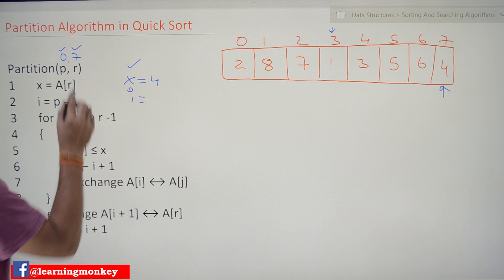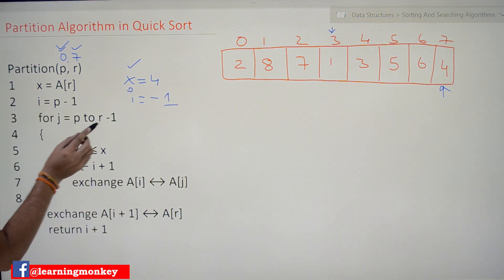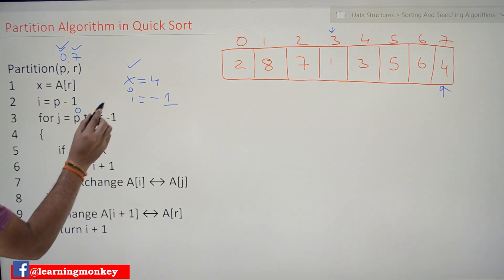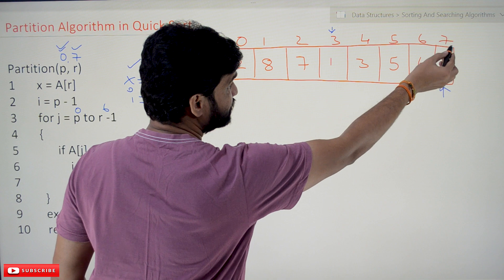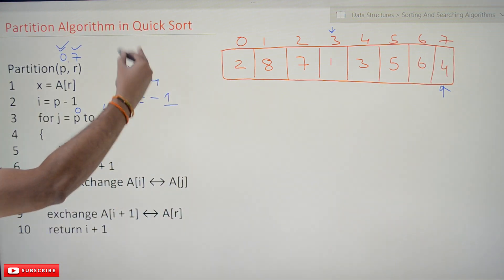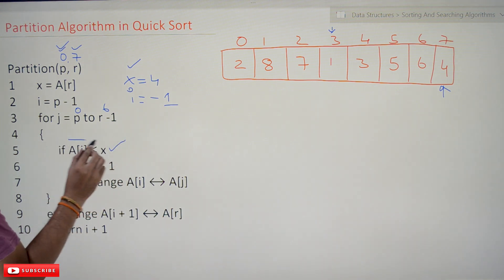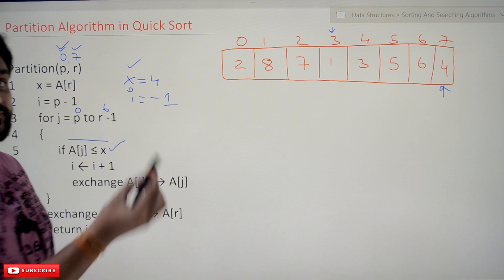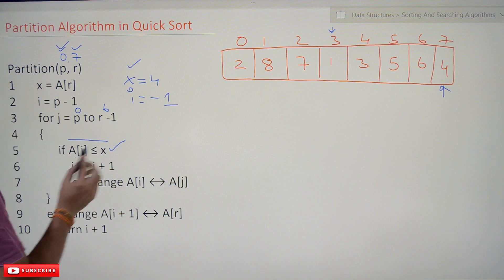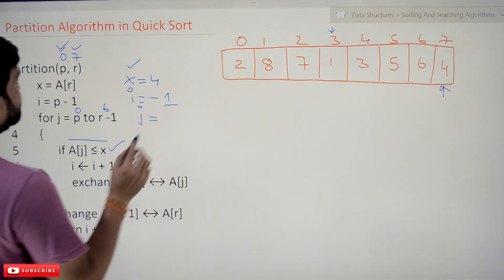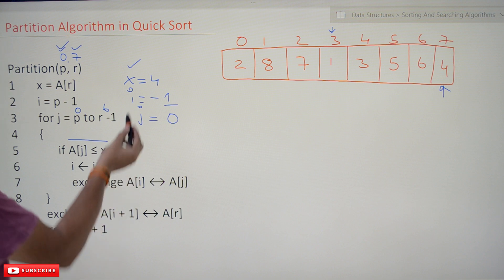Now, i is initialized to p minus 1. Here p is 0, so i is equal to minus 1. And j iterates from p to r minus 1, meaning from 0 to 6, because the last element (index 7) is the pivot element and we are finding its position. This single condition — a[j] less than or equal to x — contains the entire logic of the partition algorithm. Let's understand that logic in detail. j starts at 0.